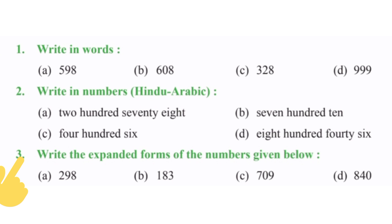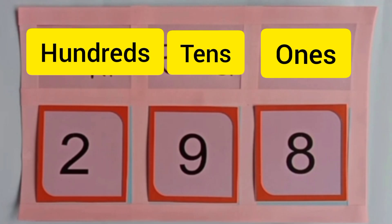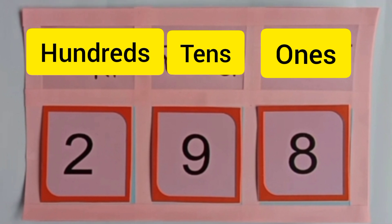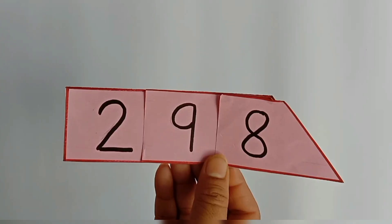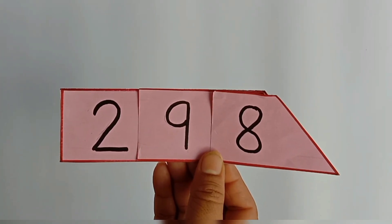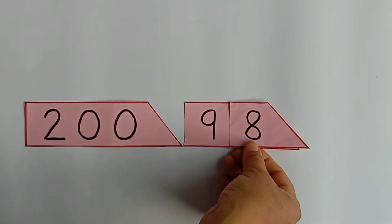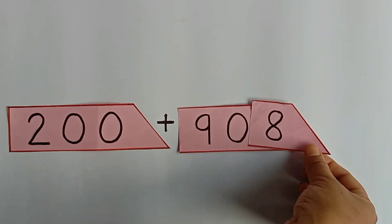Our next question is: write the expanded forms of the numbers given below. We will solve the first part of this question, which is two hundred ninety-eight. The expanded form of a number is hidden in that particular number — expanded form means to expand the number. In the way we read a number, we write it. So, the expanded form of this number is two hundred plus ninety plus eight.